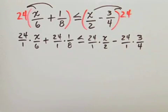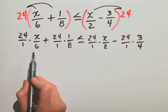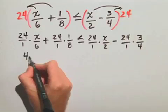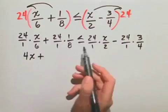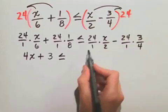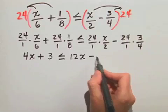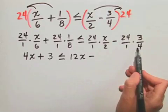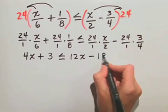Now that we're multiplying fractions, we can divide out common factors. Because the 24 and 6 are both divisible by 6, this simplifies to 4x plus 24 divided by 8 gives us 3, is less than or equal to 24 divided by 2 gives us 12x minus 24 divided by 4 is 6 times 3 gives us 18.